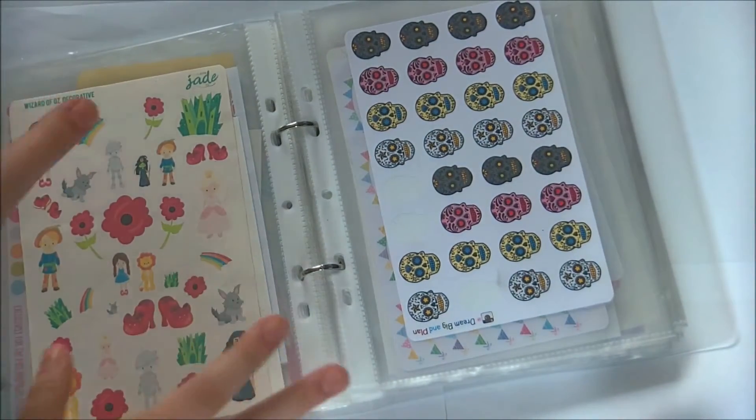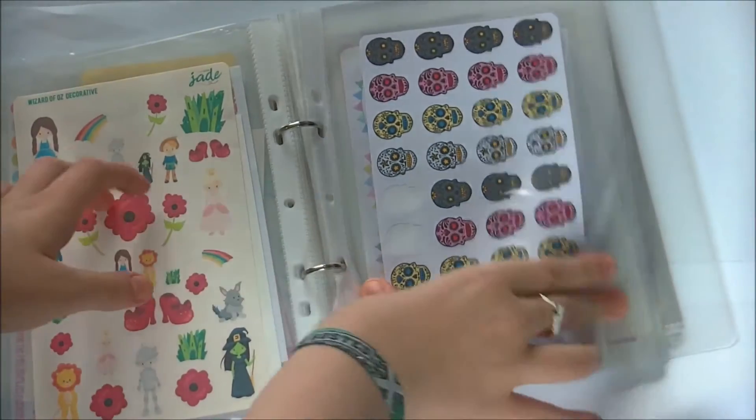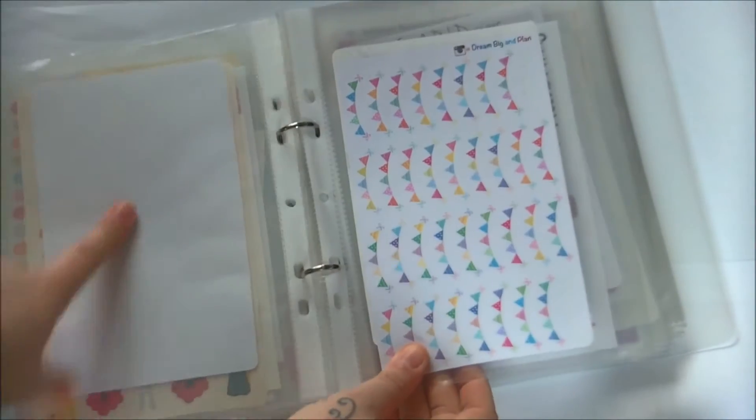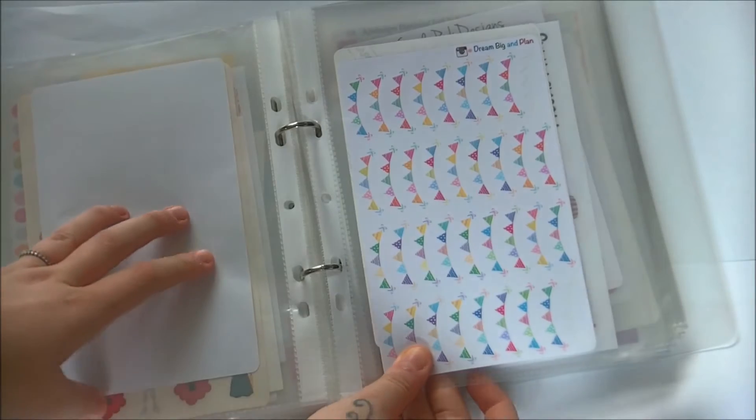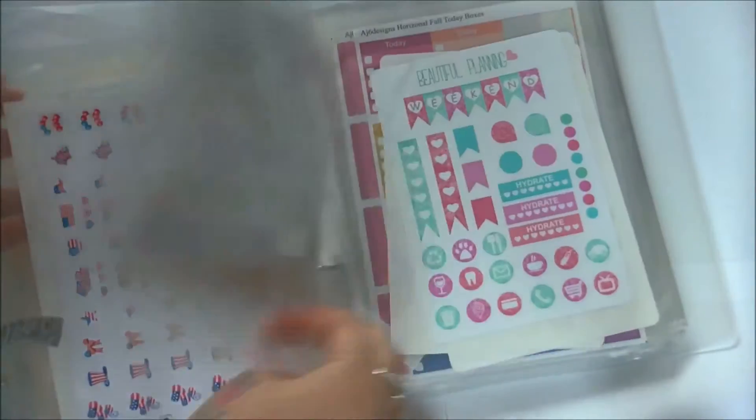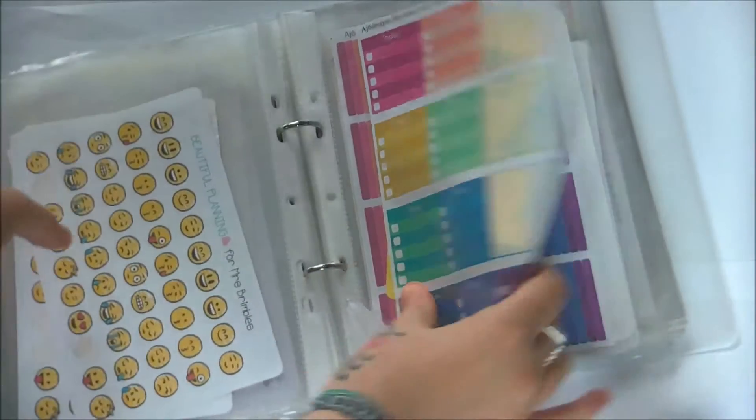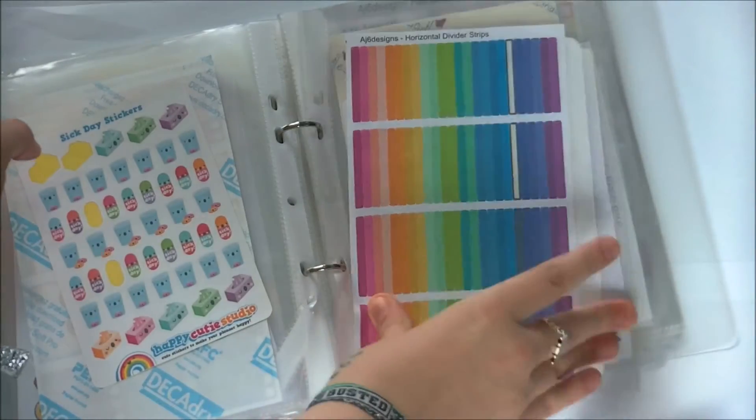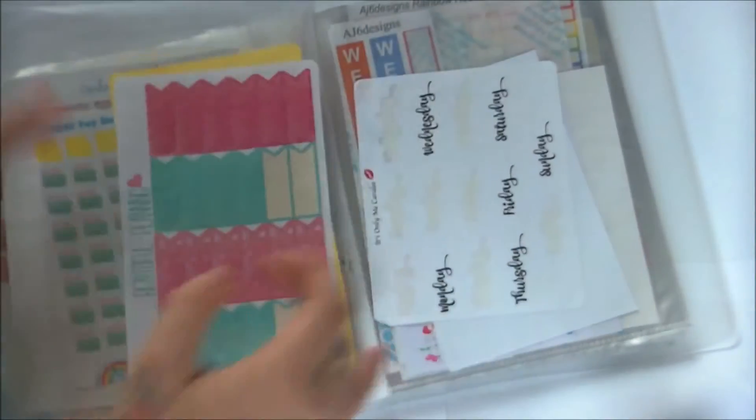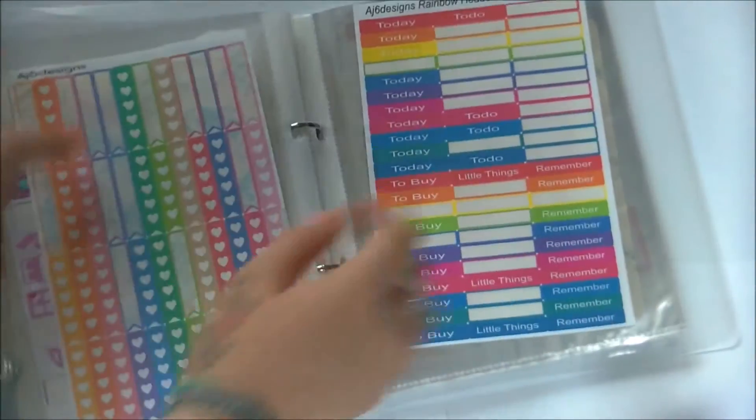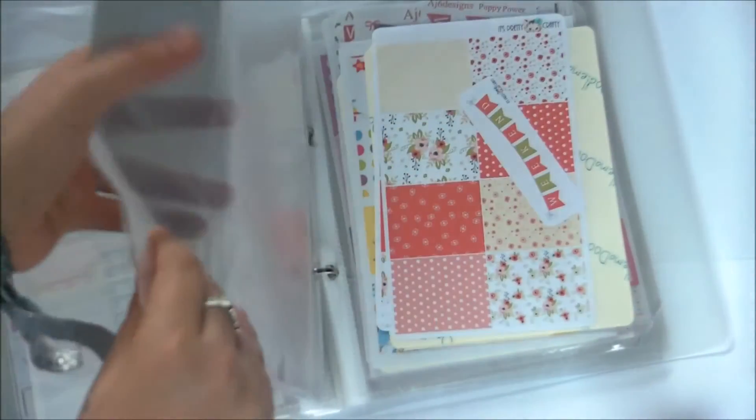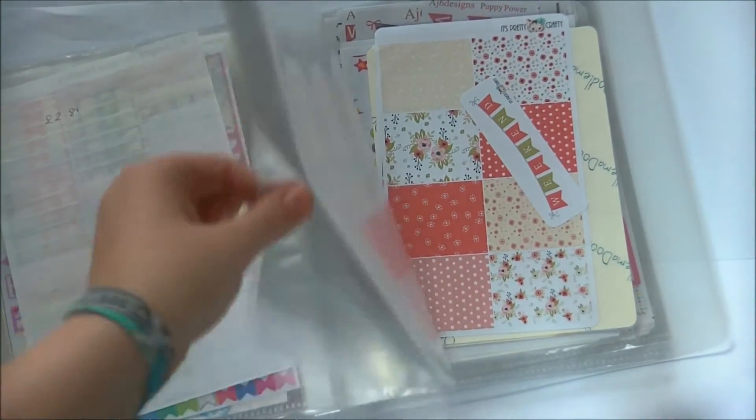If I have any sheets that look like they're part of a set but I don't have the full set, they'll come in this part as well. I have some space because I'm about to put some stickers in here that I featured in a sticker haul. I just flick through and pick what I need.